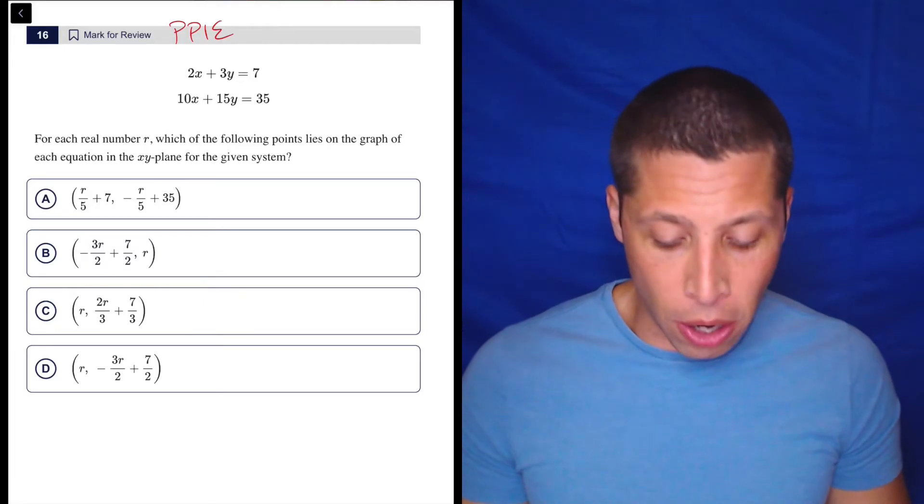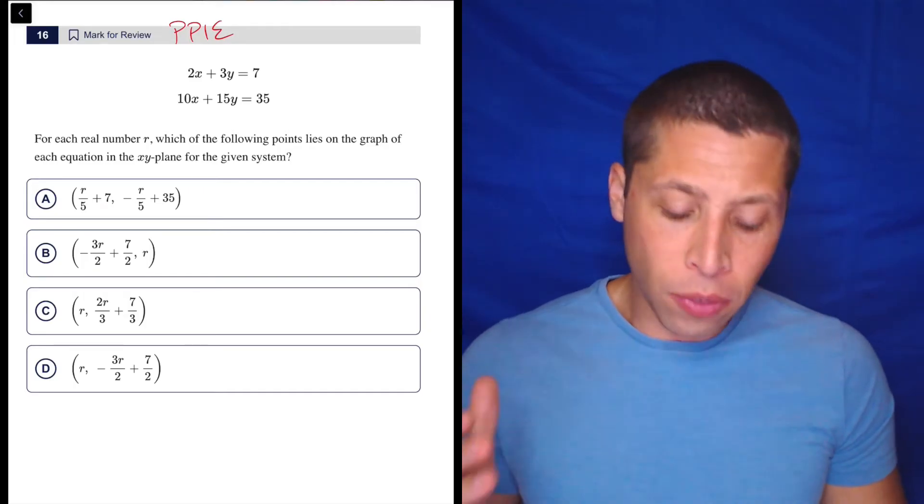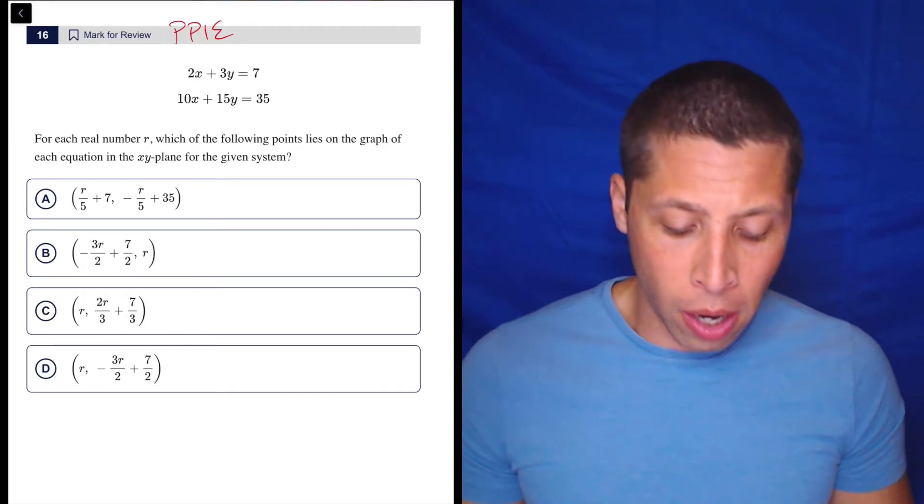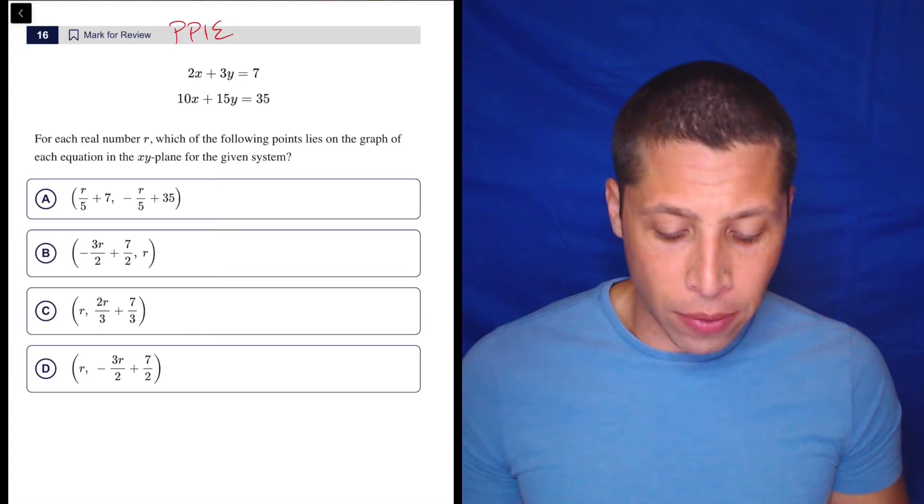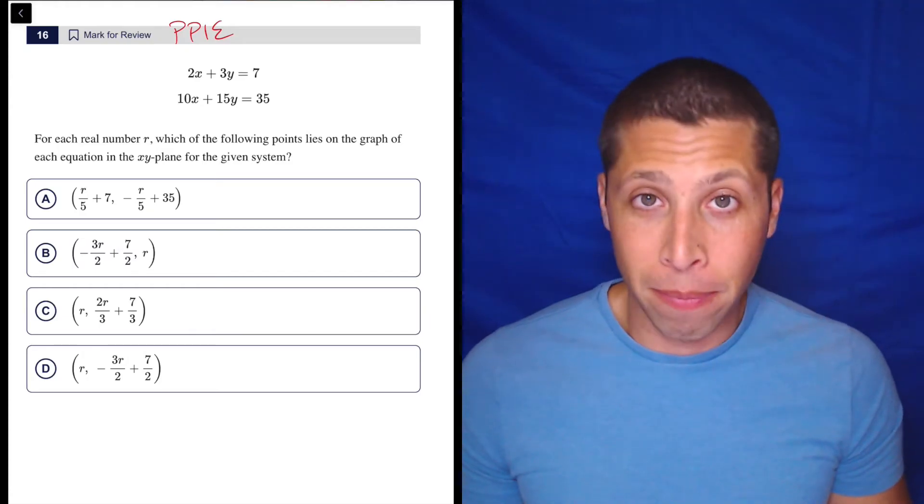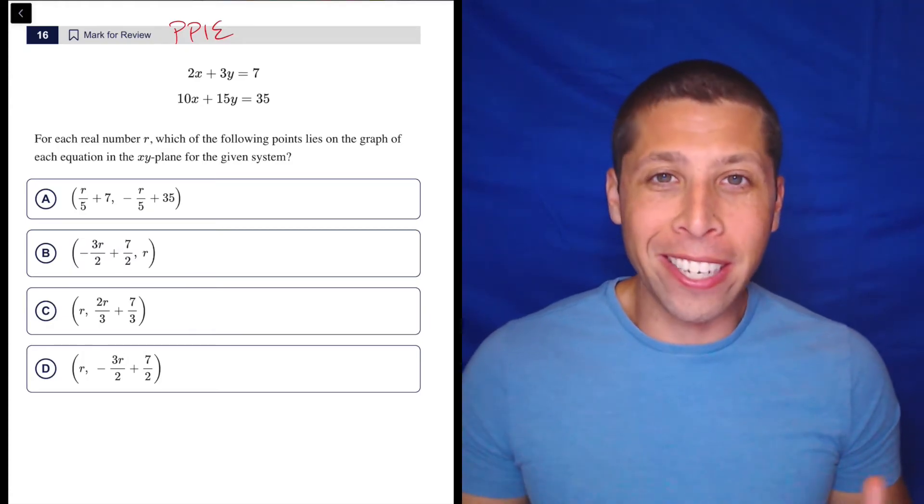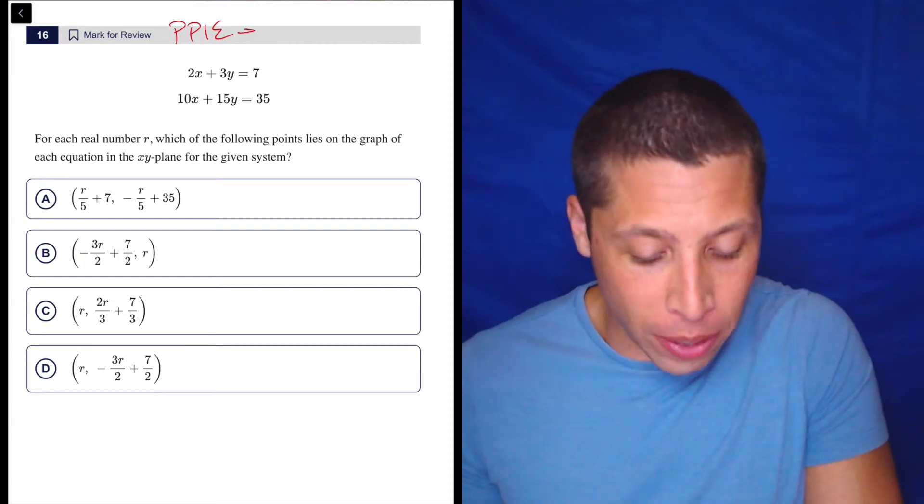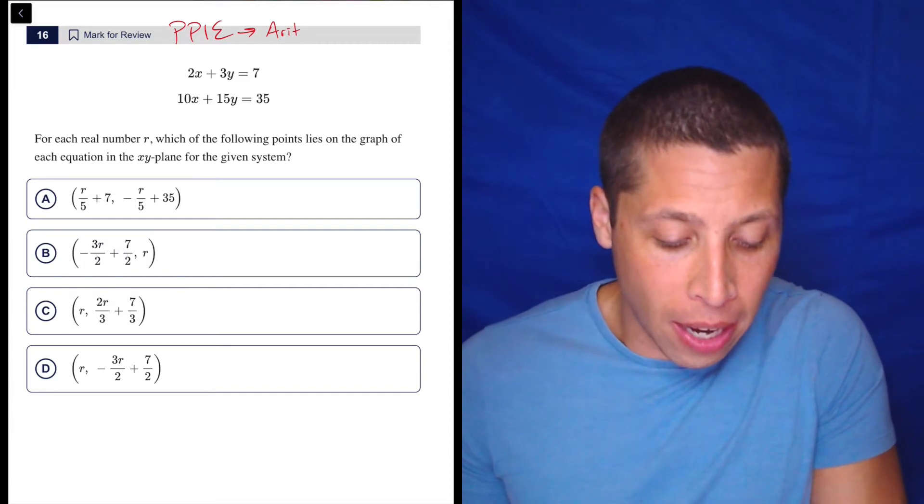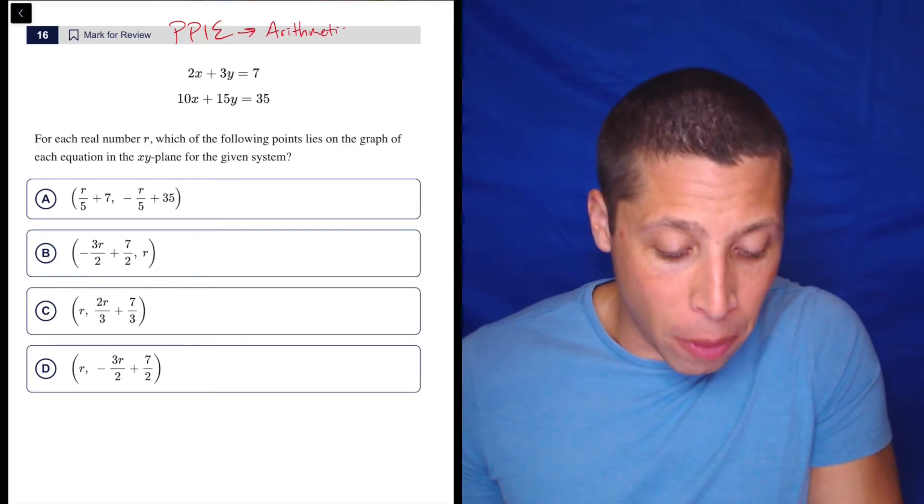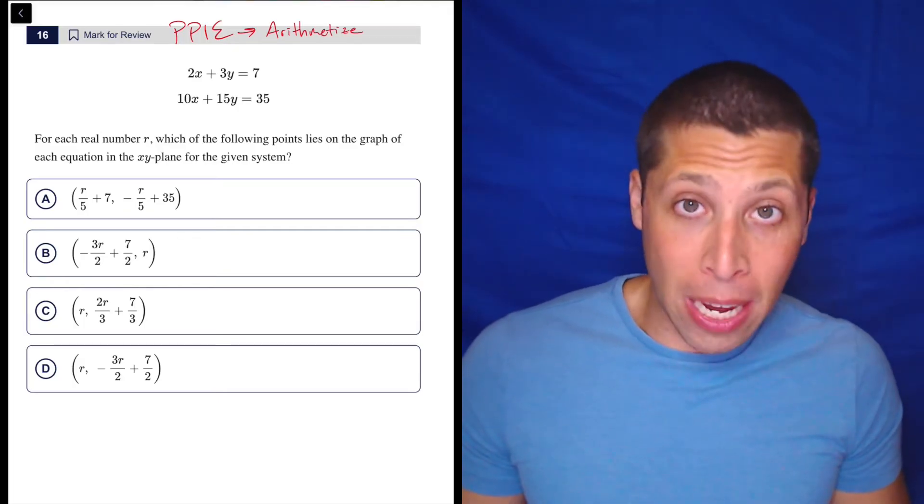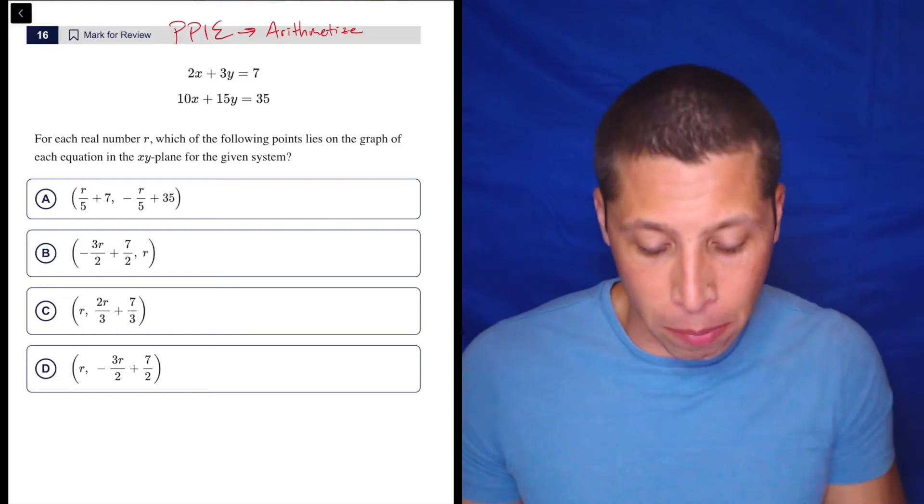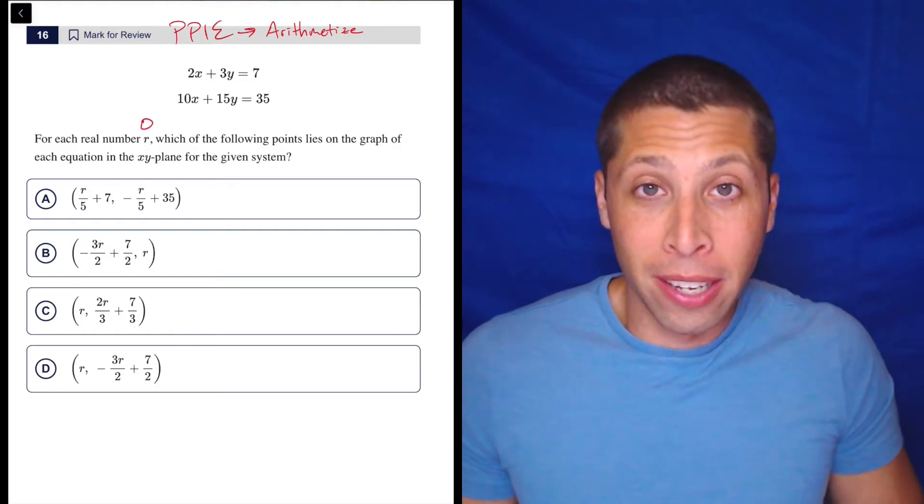It's not the end of the world to use the R, but notice the question. It says, for each real number R, which of the following points lies on the graph of each equation in the XY plane for the given system? Well, that's basically the SAT's way of saying arithmetize, make up a number for R. So whenever we have points, we can plug them in, but if the point is messy like this, maybe we can make up a number to get rid of one of the variables, and zero is a real number.